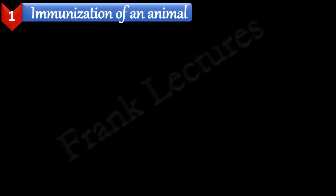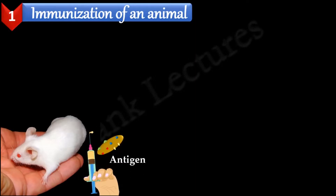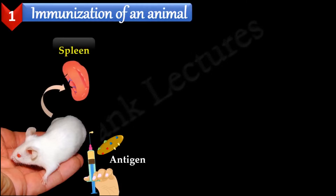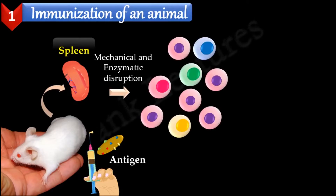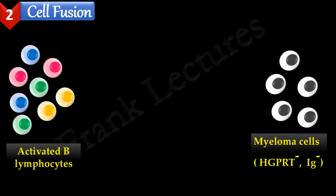The very first step in the production of monoclonal antibodies is to immunize an animal with the appropriate antigen. Subcutaneous injections at multiple sites enable increased stimulation of B lymphocytes for that specific antigen. The animal is then sacrificed, the spleen is removed, and the lymphocytes are separated from other cells by density gradient centrifugation.